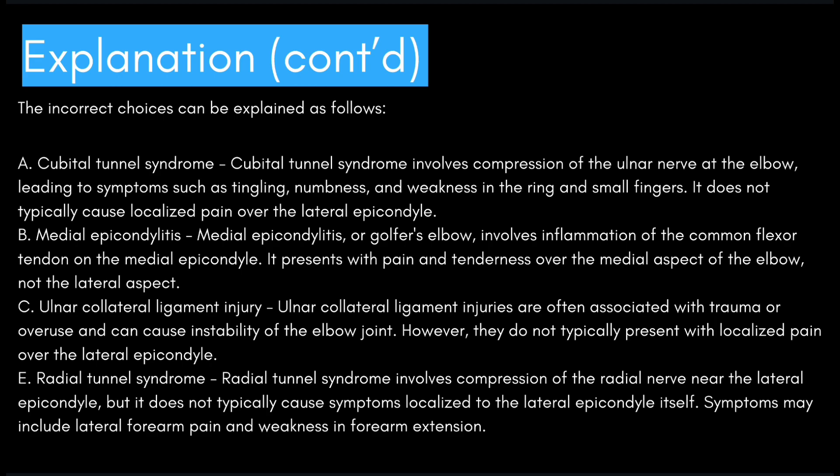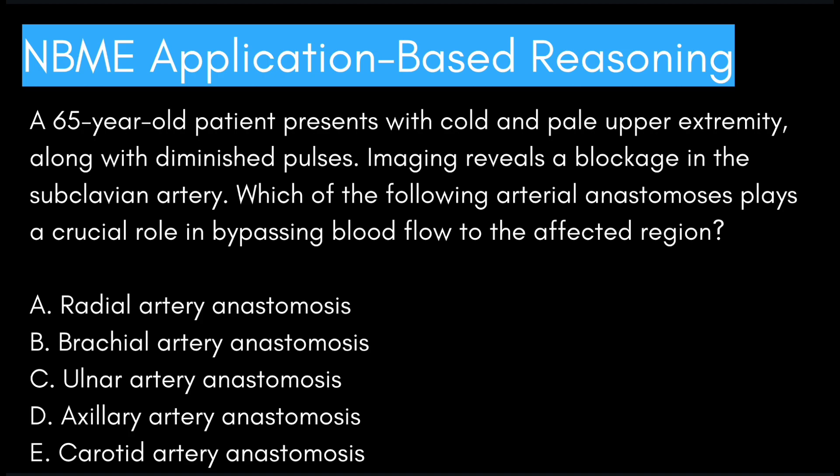Let's check out the next question. A 65-year-old patient presents with a cold and pale upper extremity along with diminished pulses. Imaging reveals a blockage in the subclavian artery. Which of the following arterial anastomoses plays a crucial role in bypassing blood flow to the affected region?